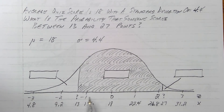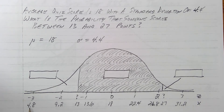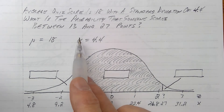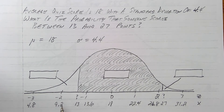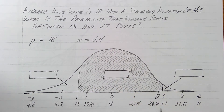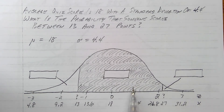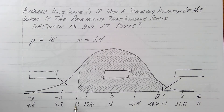What's the probability I reach into a hat and randomly select someone who scored between 13 and 27 points on this quiz? My Z numbers run from negative 3 to positive 3. My raw quiz scores run from an unusually low 4.8 up to an unusually high 31.2. I place 13 — which is between 9.2 and 13.6 — and 27 — which is between 26.8 and 31.2 — then draw lines up and shade in between. This is what I'm looking for: the area between 13 and 27.